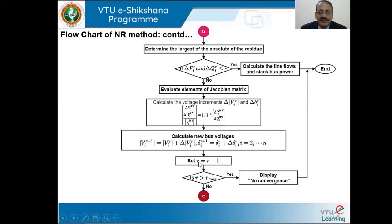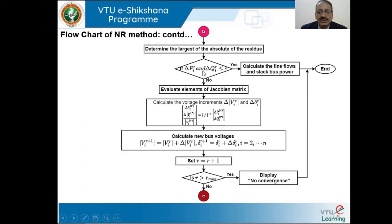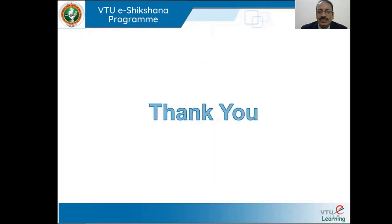Once the update is complete, set the iteration count R = R + 1 and check whether R is greater than R-max. If yes, display that there is no convergence and stop the program. Otherwise, with the updated voltages and angles, recalculate the power mismatches. If the mismatch is less than epsilon, calculate the line flows and slack bus power, then the program stops.